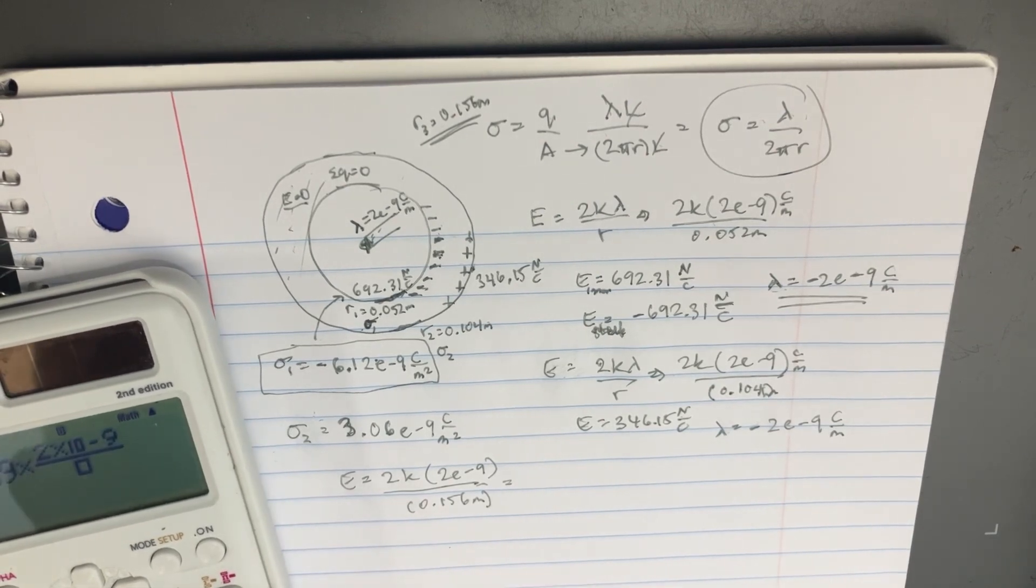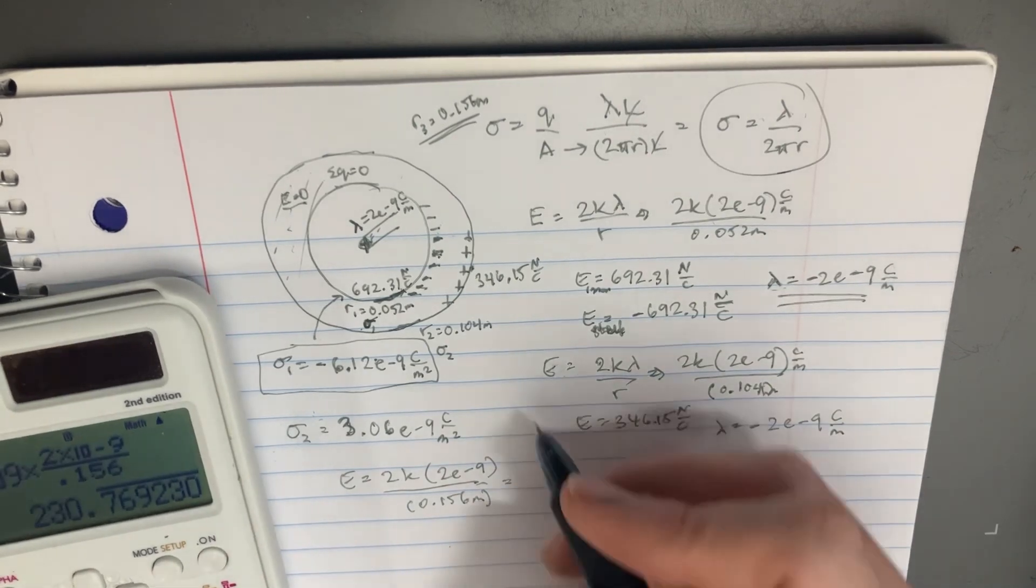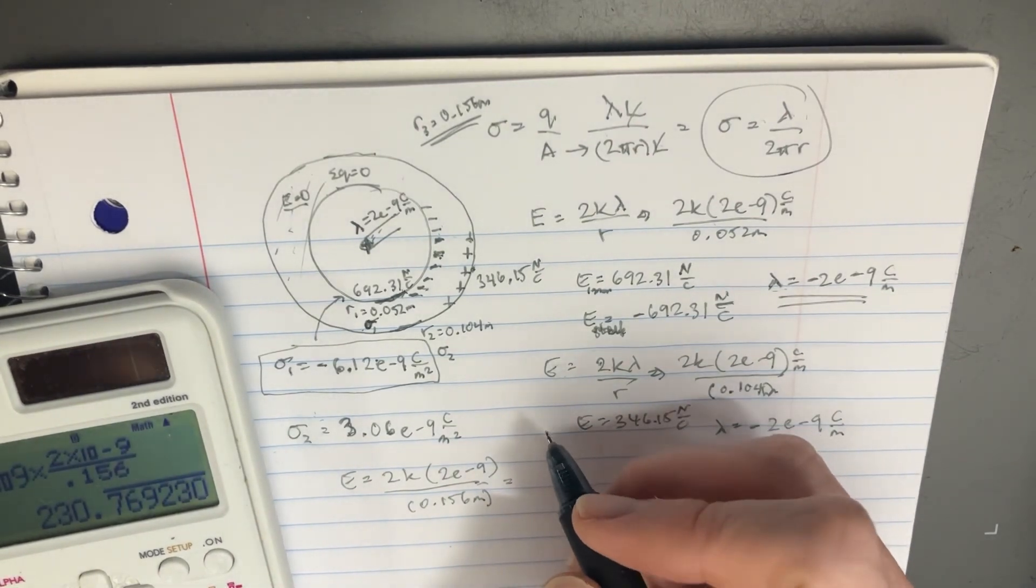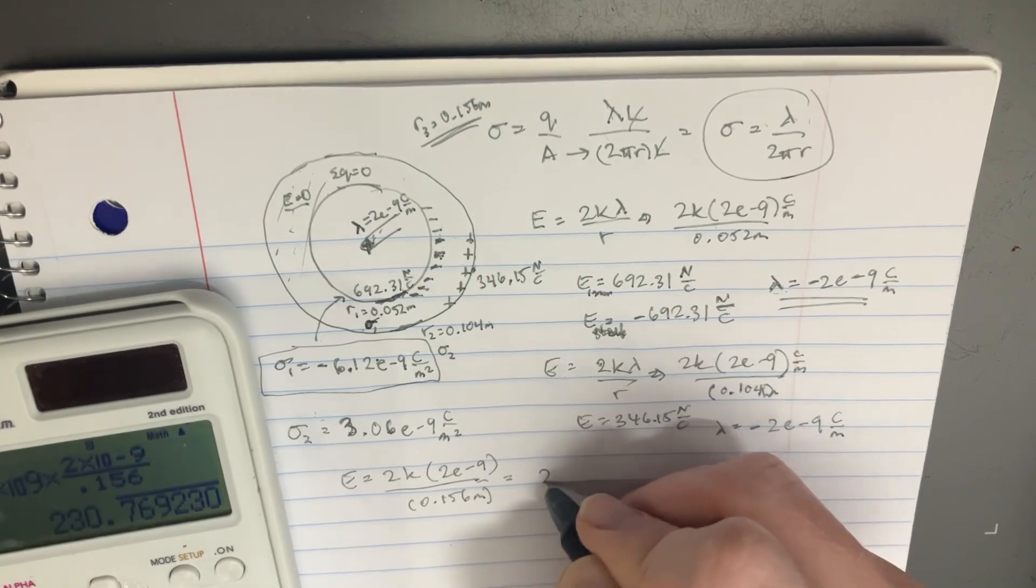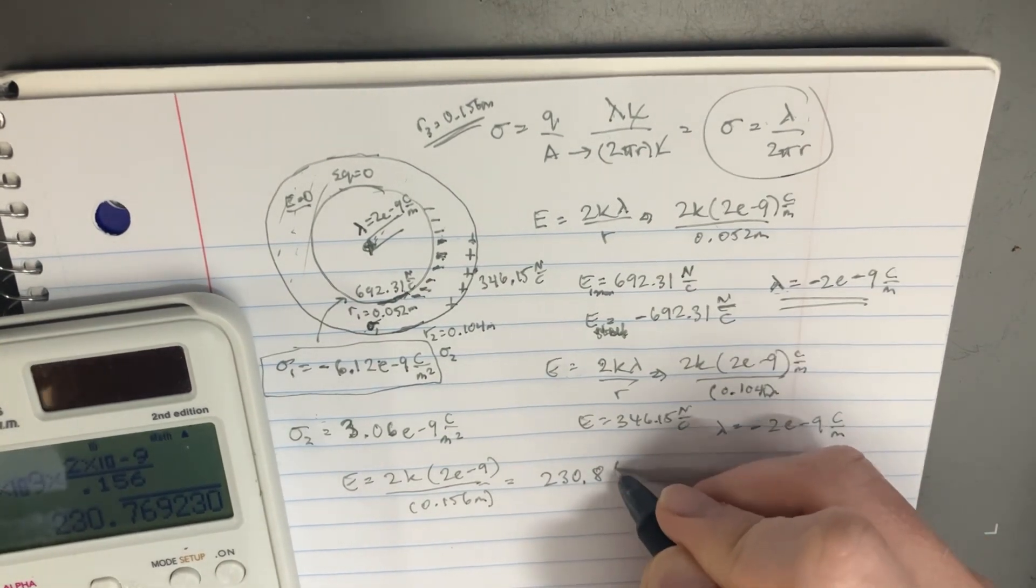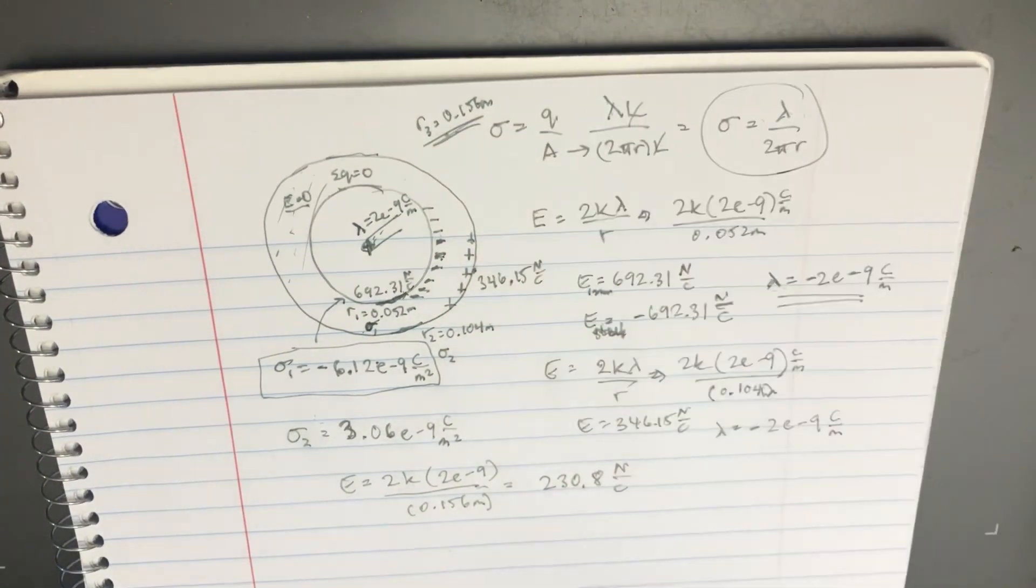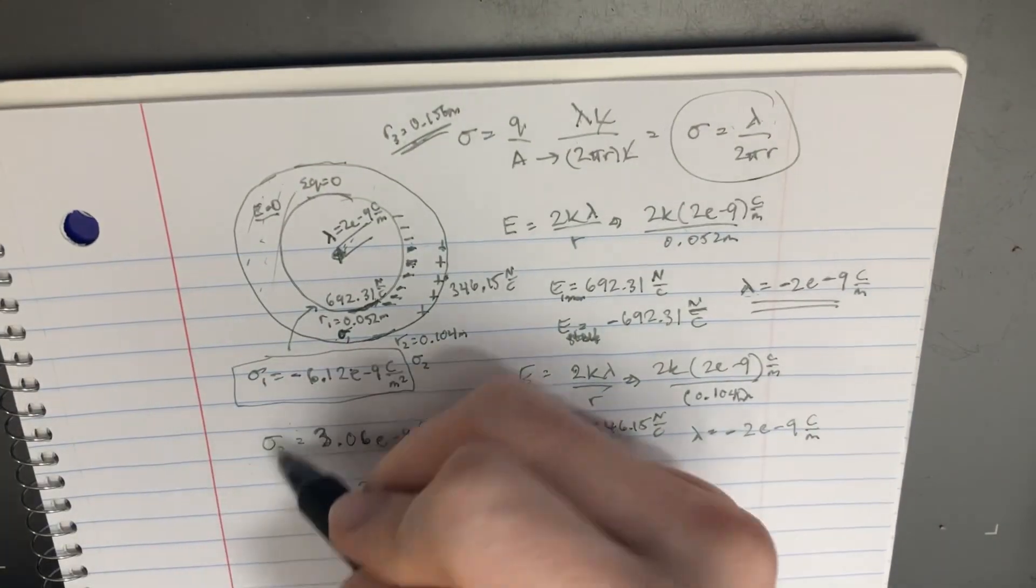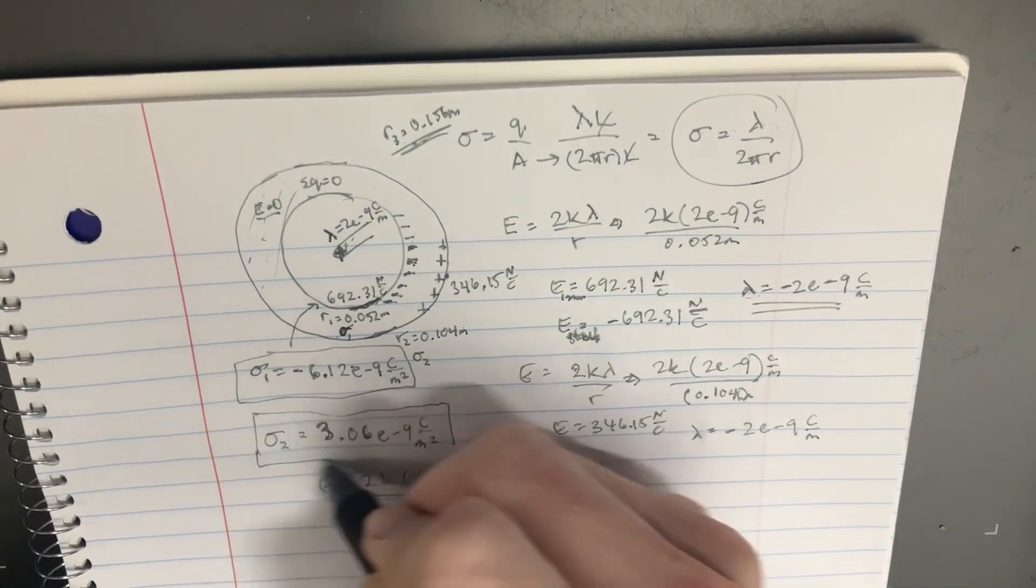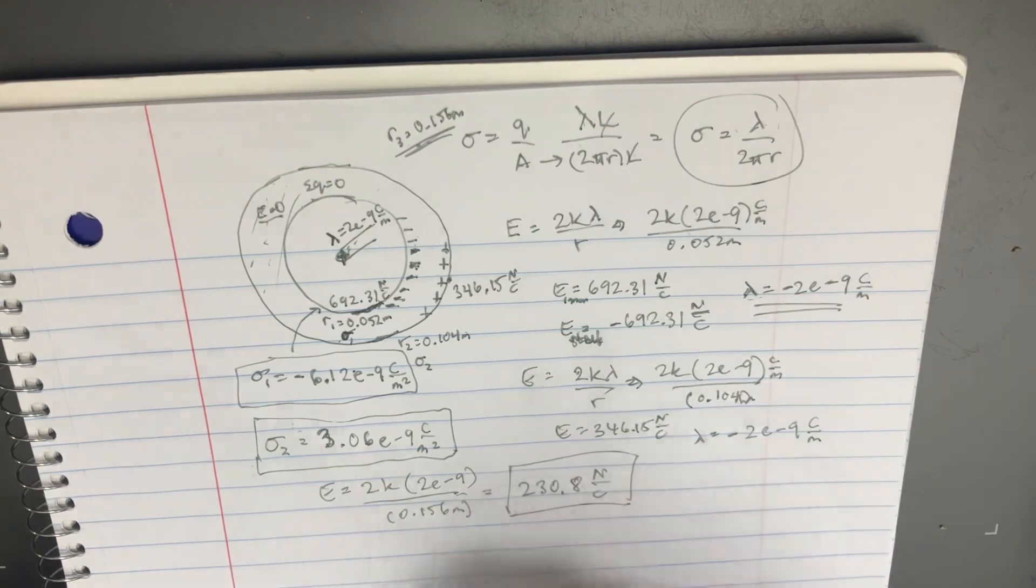And so we should be getting 2 times 9 e to the 9 times 2 e to the negative 9 divided by 0.156. And we should get a total of 230.8 newtons over coulombs at this particular point right here. So those are the values that we were looking for and how we managed to get these numbers just by a little bit of calculation here.